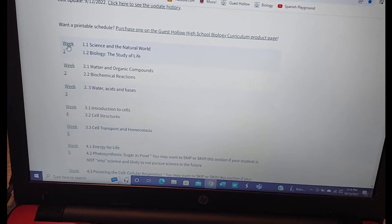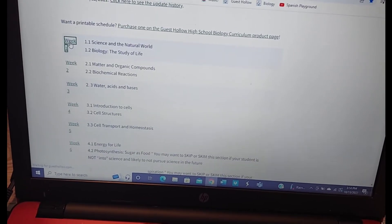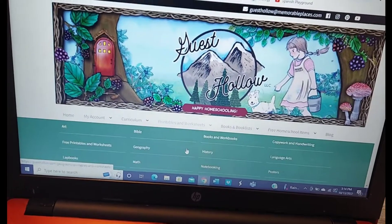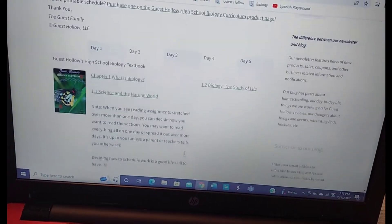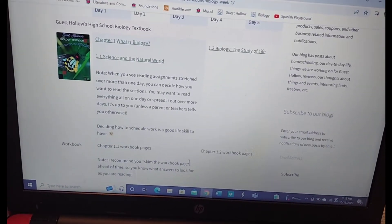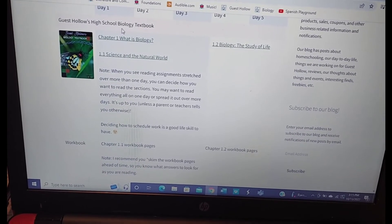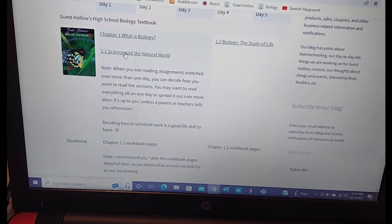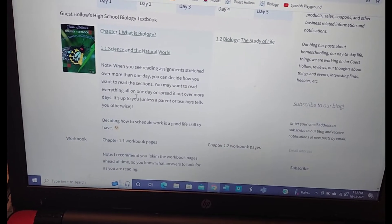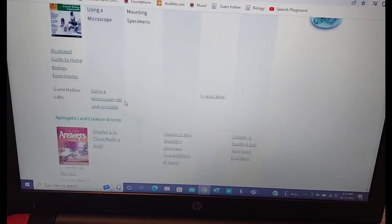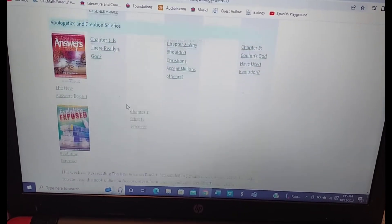This is how the online schedule works separated by weeks. This is week one. And then you just follow along what it tells the child to read. This is the online spine book right here. It would be chapter one, what is biology? And then 1.1 science in the natural world. It's very easy to follow along. I kind of picked what my child wanted to do from the schedule and what I thought was very important.